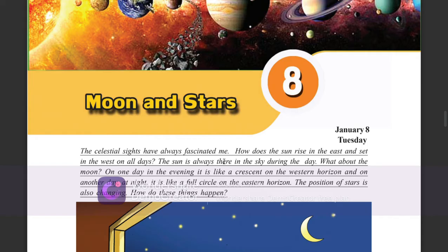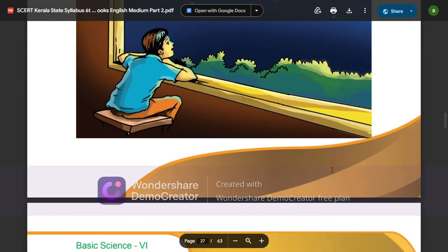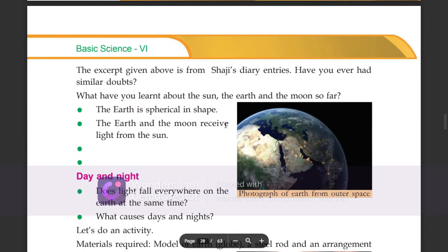So how are we having these stars coming into these characters? The excerpt given above is from Shaji's diary. Have you ever had similar doubts?